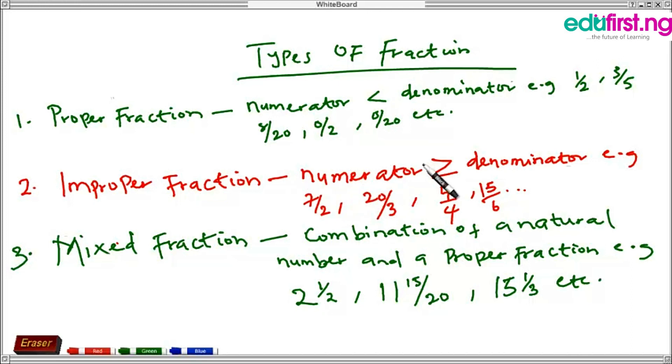Improper fraction: the numerator is greater than or equal to the denominator. Here we have examples such as 7 over 2, 20 over 3, 4 over 4. We have this because we said it can be equal to, that means the numerator can be equal to the denominator. And we can have 15 over 6. They are all examples of an improper fraction.